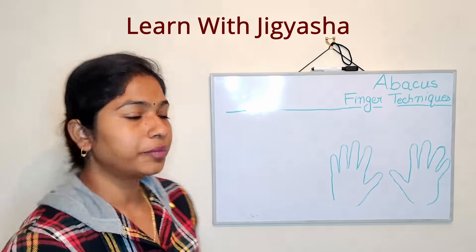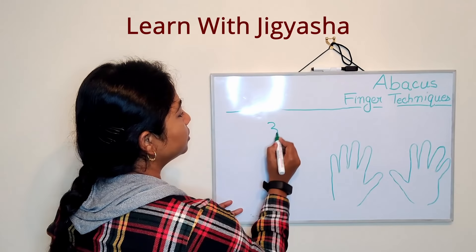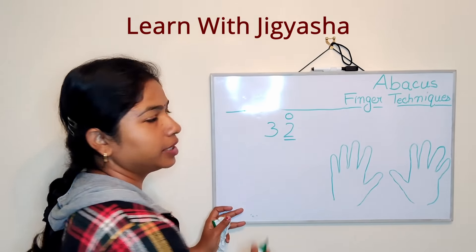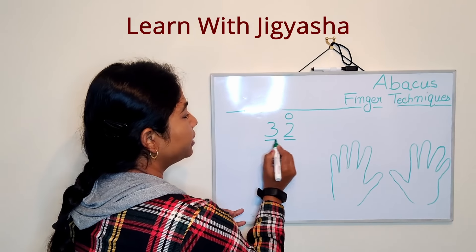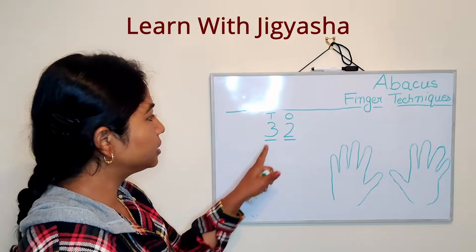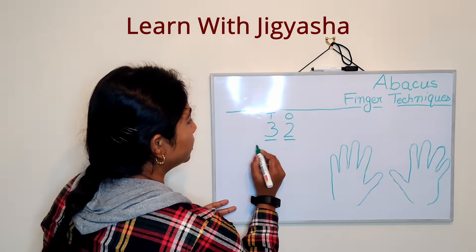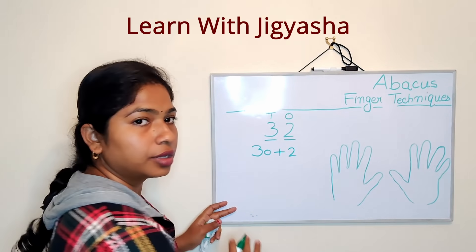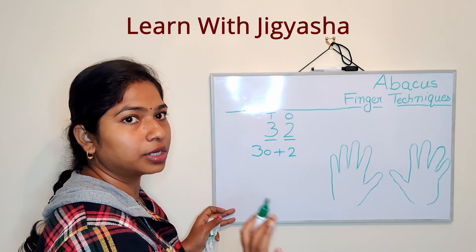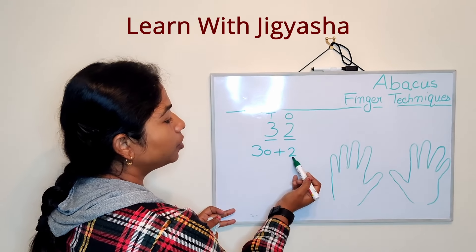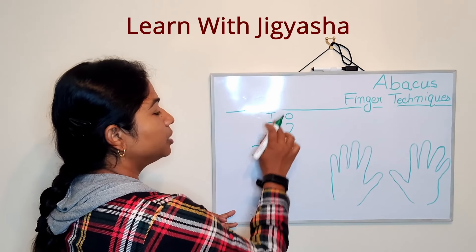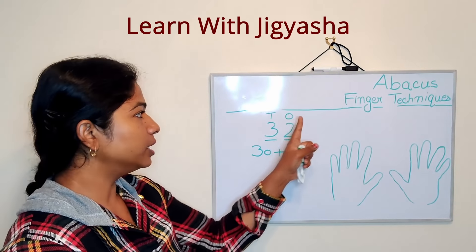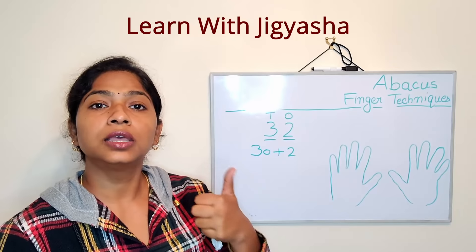I have written the number 32. In 32, the digit on the right-hand side is in the ones place and the digit on the left-hand side is in the tens place. If I break 32, the 3 becomes 30 and the 2 remains 2. So the tens digit contains two digits and the ones digit contains one digit.